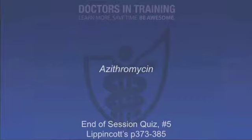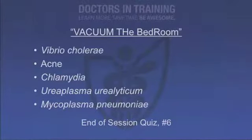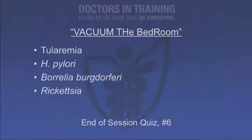Chlamydia pneumoniae — azithromycin (large single dose); the go-to regimen is ceftriaxone plus doxycycline. Question 6: What organisms can be treated with tetracyclines? 'Vacuum the bedroom' mnemonic: Vibrio cholerae, Acne, Chlamydia, Ureaplasma urealyticum, Mycoplasma pneumoniae, Tularemia, Helicobacter pylori (as part of multi-drug regimen), Borrelia burgdorferi (Lyme disease), and Rickettsia (Rocky Mountain spotted fever).